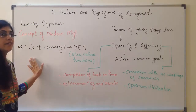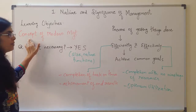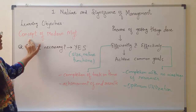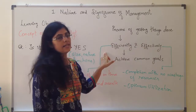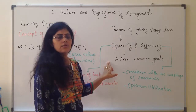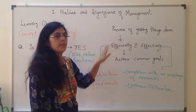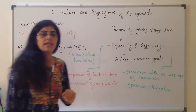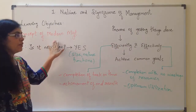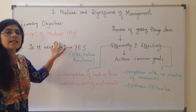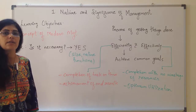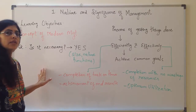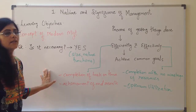In today's class we have achieved the learning objective: the concept of modern management. If you have to write the answer and define modern concept of management, it will be: it is the process of getting things done efficiently and effectively to achieve the common goals of the organization. All the keywords — efficiently, effectively, common goals, things done — must be present in the definition. Tomorrow's class we will be seeing the features, or characteristics, of management, so stay tuned.